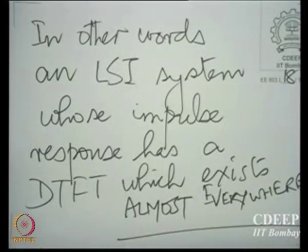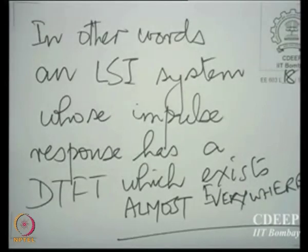The moment you say discrete-time Fourier transform, you are talking about the angular frequency axis. It exists almost everywhere on the angular frequency axis — in other words, on the angular frequency axis between minus pi and pi, or on the unit circle in the z-plane, there is at most a finite number of isolated points where there could be non-convergence, but otherwise everywhere else it converges.